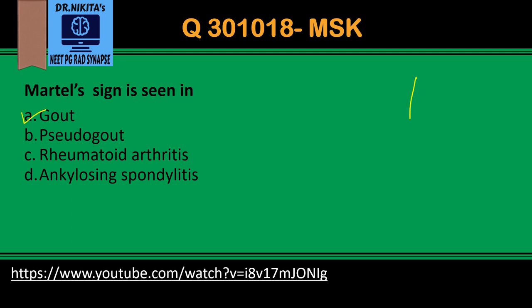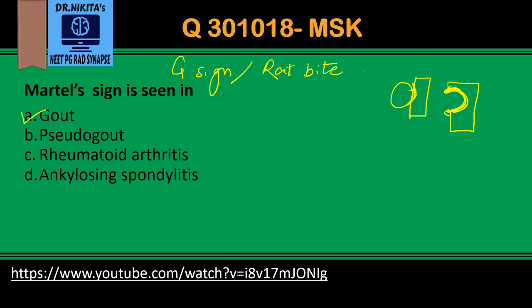What is the Martell sign? If this is the bone and you have a tophi in gout, when this tophi erodes the bone it causes a lytic lesion in the bone. This lytic lesion has overhanging margins — these are called punched out lytic lesions with overhanging margins, or rat bite erosions in gout. This is called the Martell sign, also called the G sign, or rat bite erosions.